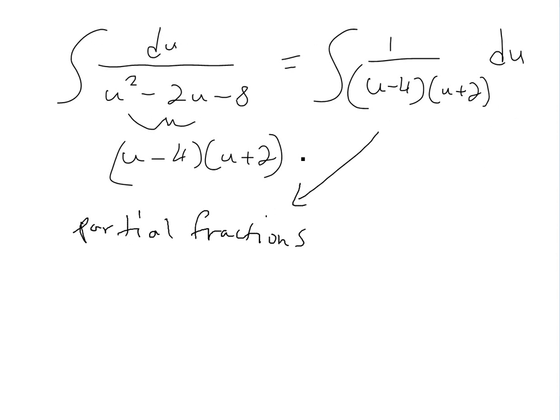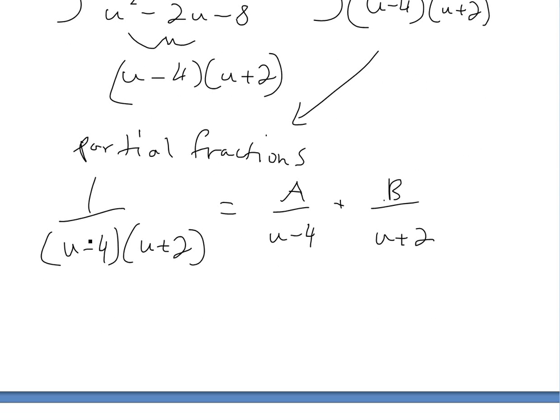So now what we could do is use partial fractions here. I'll do a video on this later, basically why I do all this. So we could simplify this one here to 1 over u minus 4 times u plus 2 equals A over u minus 4 plus B over u plus 2. And then if we just multiply both sides by u minus 4 bracket u plus 2, we're going to get 1 equals A times u plus 2 plus B times u minus 4. If we expand this out, we're going to get Au plus 2A plus Bu minus 4B.